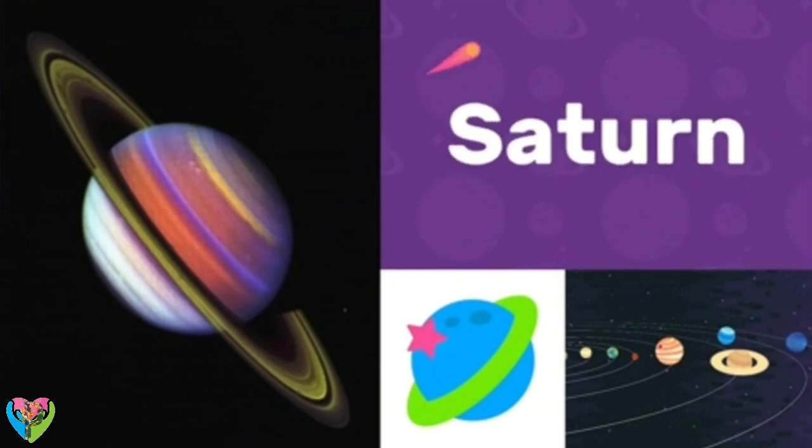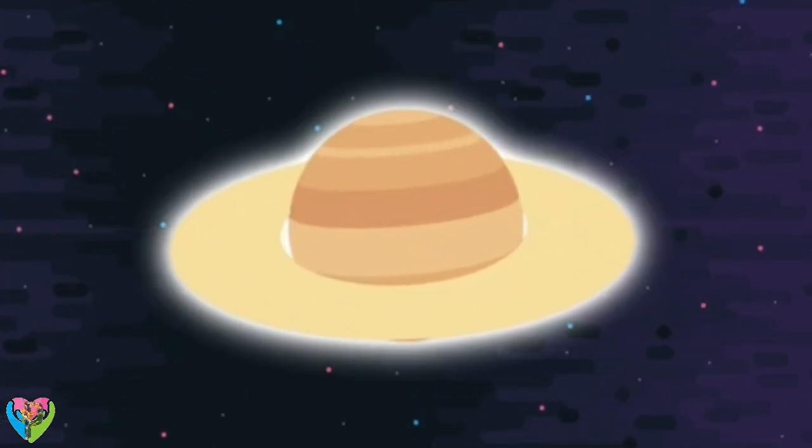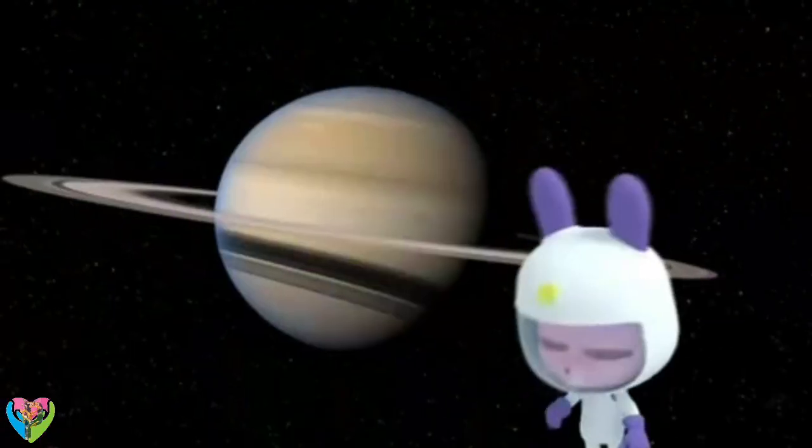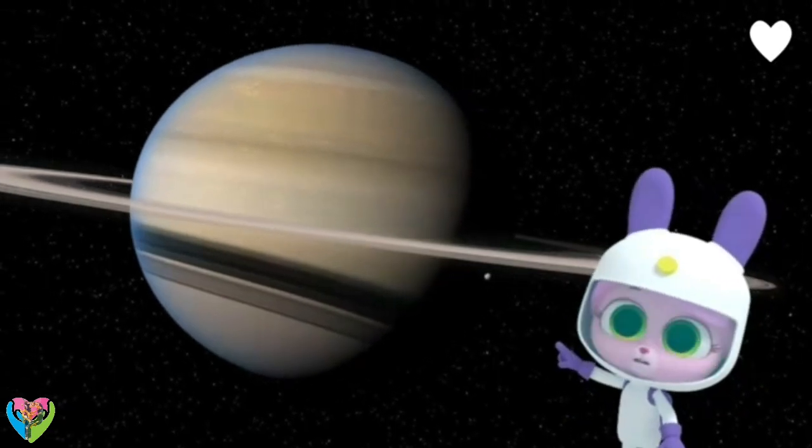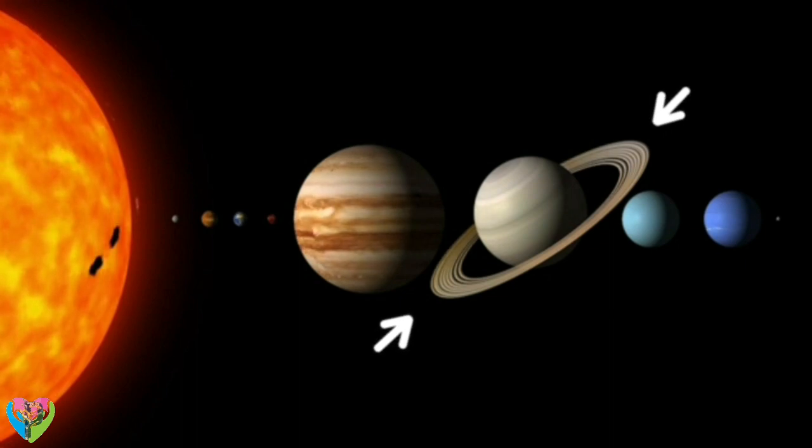Saturn. Saturn is the sixth planet from the Sun. The planet has a hula hoop around it. What makes Saturn special is that it's a gas planet with rings around it.